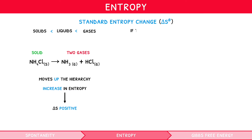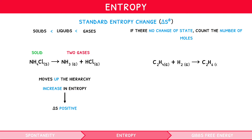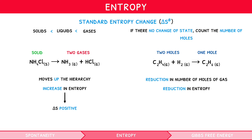But what about when the reaction does not involve a change of state? In these situations, we simply count the number of moles on either side and base our answer on this. Commonly, we do this when species are in the gaseous state. For example, C2H4 gas plus H2 gas goes to C2H6 gas. There are two moles of gas on the left-hand side and one mole on the right. Thus, there has been a reduction in the number of moles of gas, and so there must be a reduction in entropy. Therefore, delta S for this reaction is negative.